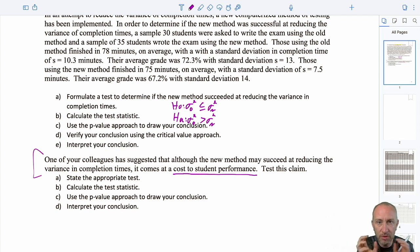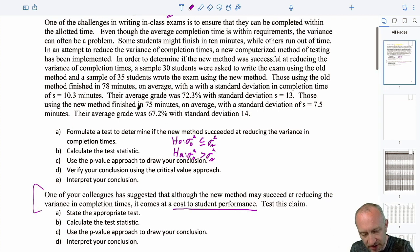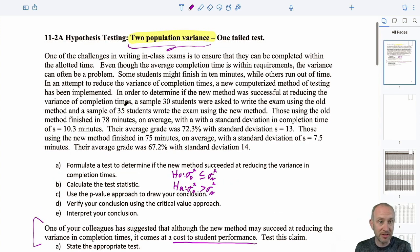Well now we're moving into a different type of test. Does it come at a cost to student performance? Well when I come back to the problem, there's a lot of information in here. Remember when we went through this in the last video, I've got some sample sizes here, average completion time, standard deviation completion time, average grade, standard deviation of the grade. There's a lot of information here. What is it that we need? What is relevant to our problem?